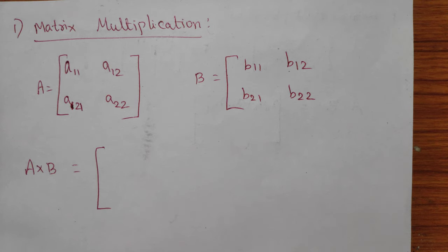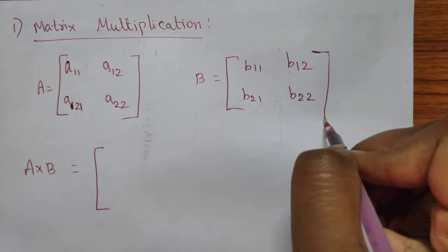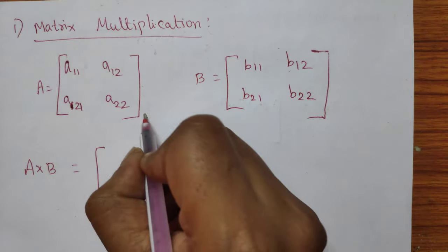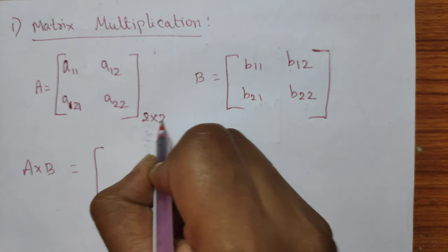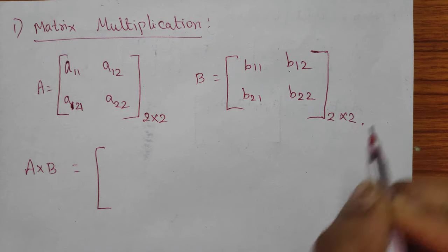Hi, in this lecture we are going to see about matrix multiplication. We are taking a 2x2 matrix. So A and B matrices are there — the two matrices are 2x2 matrices.